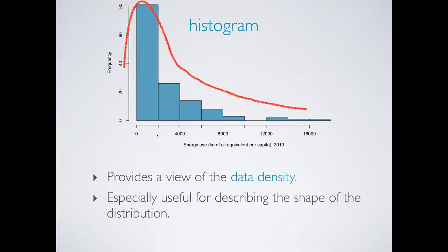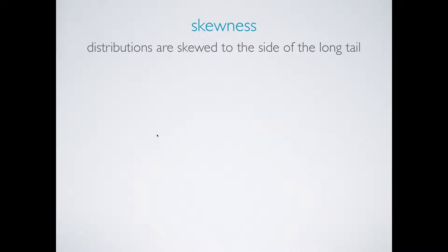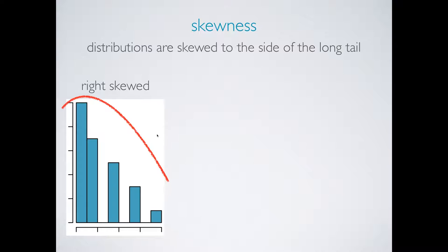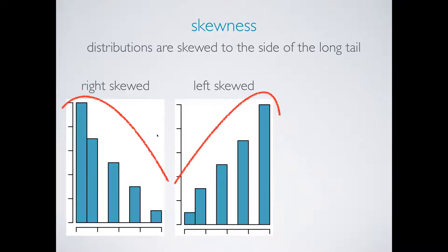First off, skewness. Distributions are said to be skewed to the side of the long tail. Here's a right skewed distribution where the longer tail is on the positive end, a left skewed distribution where the longer tail is on the negative end, and a symmetric distribution where two sides of the distribution look roughly symmetric.